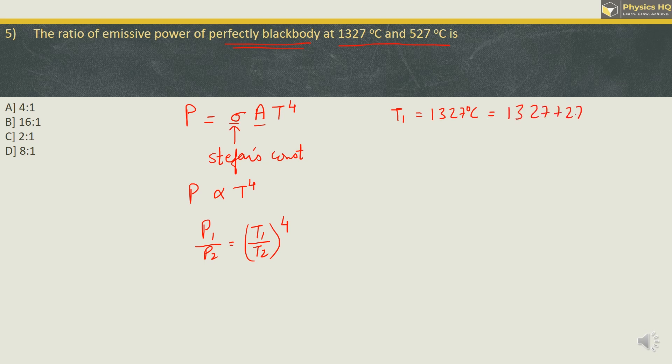Now, T1 is 1327 degree Celsius. So, we will convert this into Kelvin by adding with 273. This will become 1600 Kelvin. And similarly, for T2, 527 degree Celsius will become 800 Kelvin. Therefore, we have P1 by P2 is equal to 1600 by 800 raised to 4, which will give us 2 upon 1 raised to 4, which will be 2 raised to 4 is nothing but 16. So, we got 16 is to 1 as the answer.